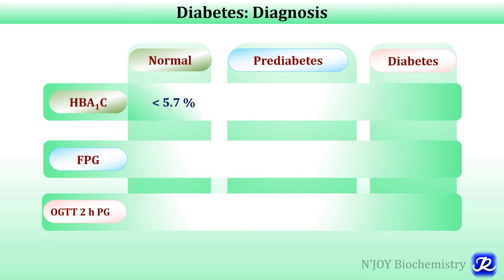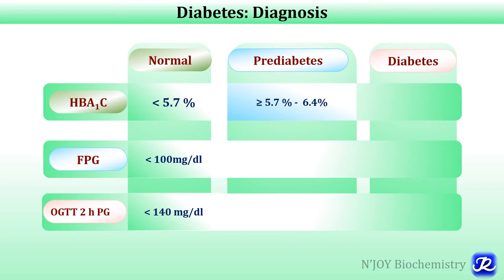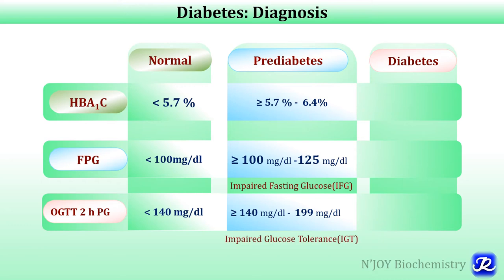The normal value of glycated hemoglobin HbA1c is less than 5.7 percent, fasting plasma glucose in normal individuals should be less than 100 milligram per deciliter, and two-hour post-load glucose on oral glucose tolerance test should be less than 140 milligram per deciliter. In pre-diabetes, HbA1c of 5.7 to 6.4 percent is considered pre-diabetes; fasting plasma glucose of 100 to 125 mg/dL is called impaired fasting glucose; and two-hour post-load glucose of 140 to 199 mg/dL is impaired glucose tolerance.